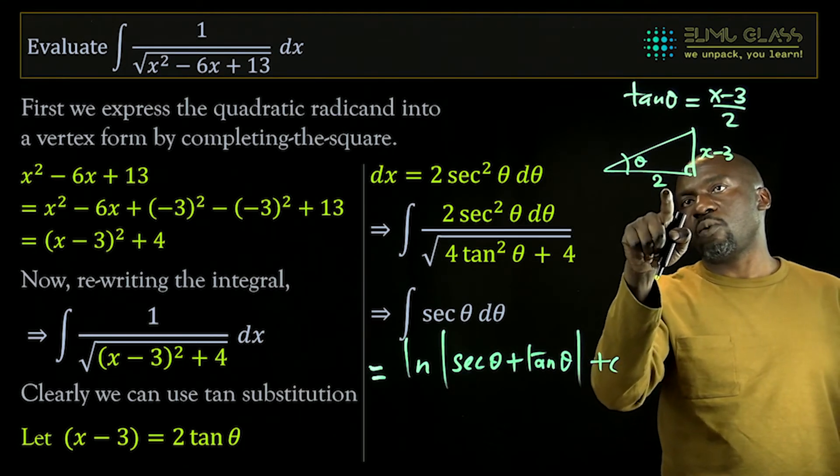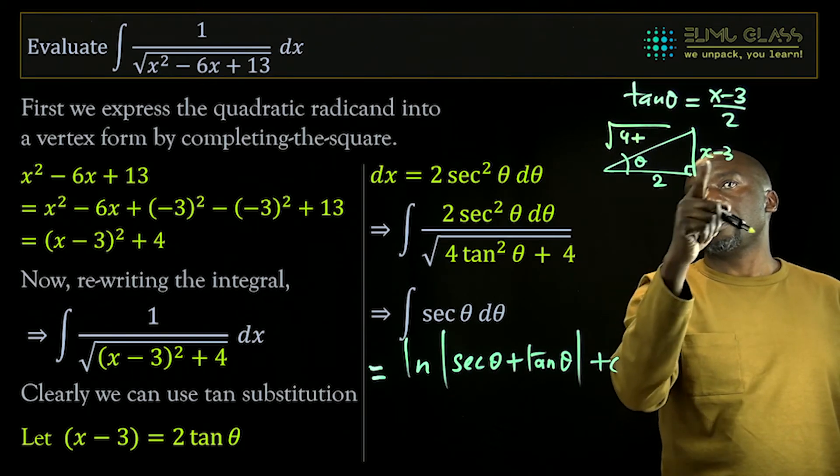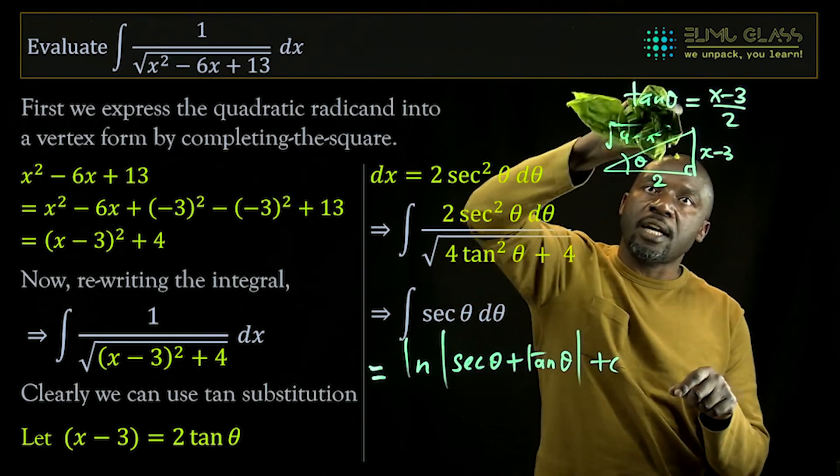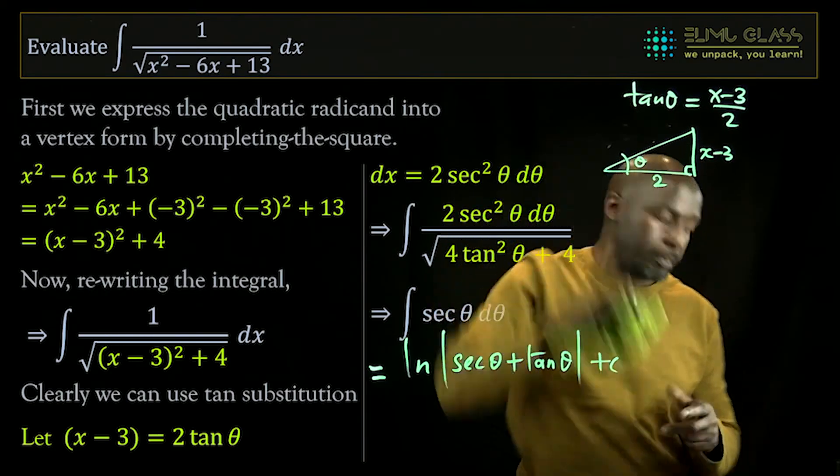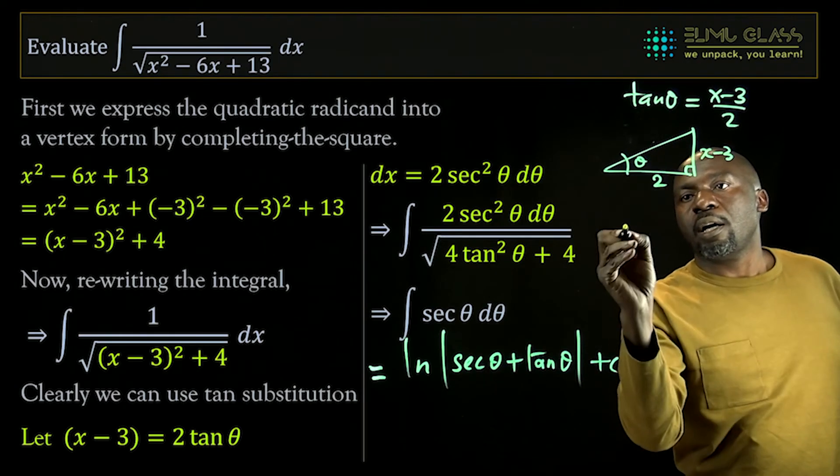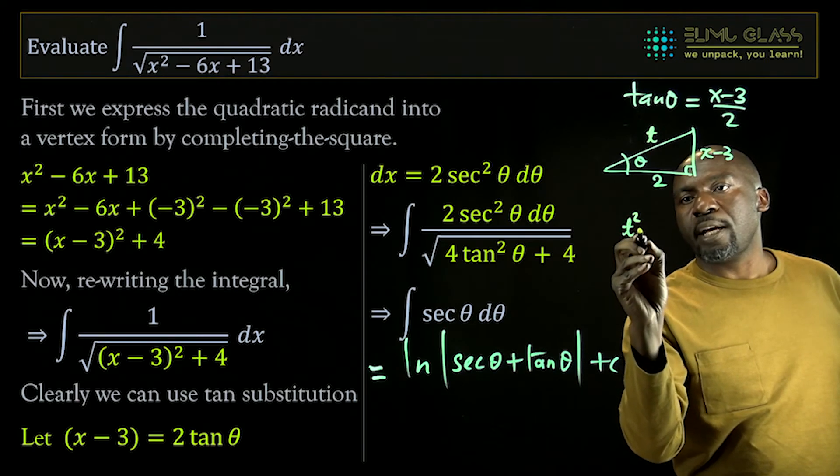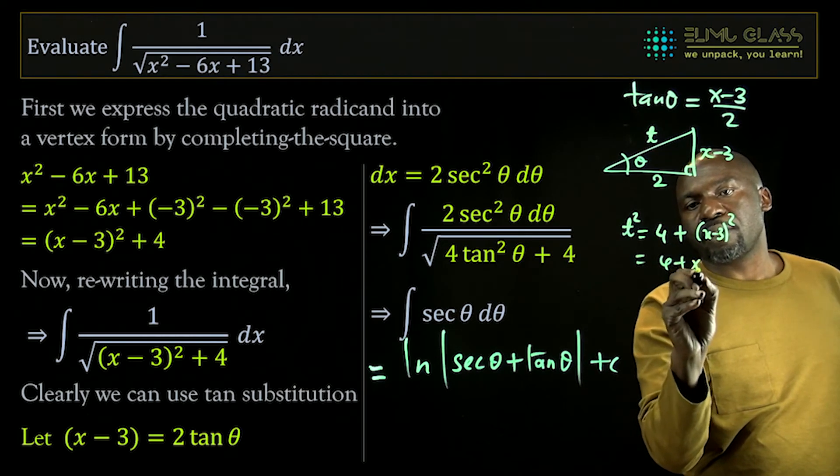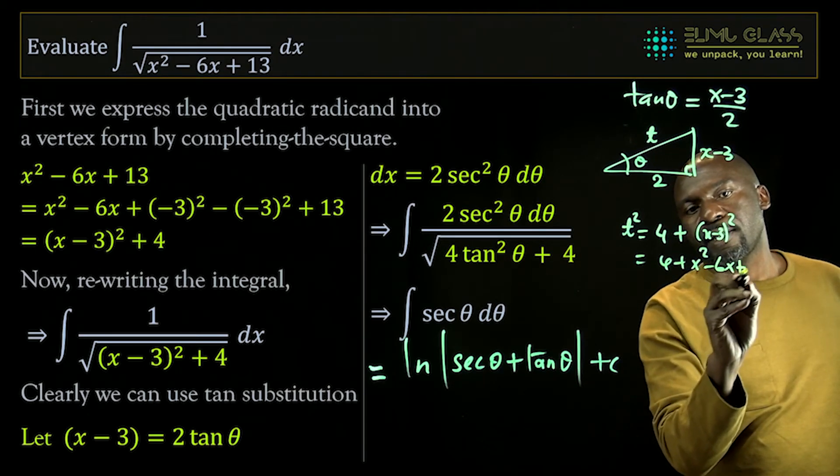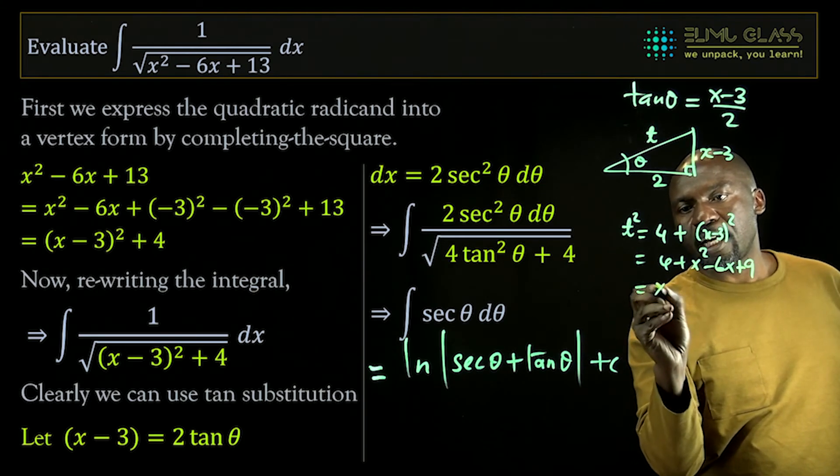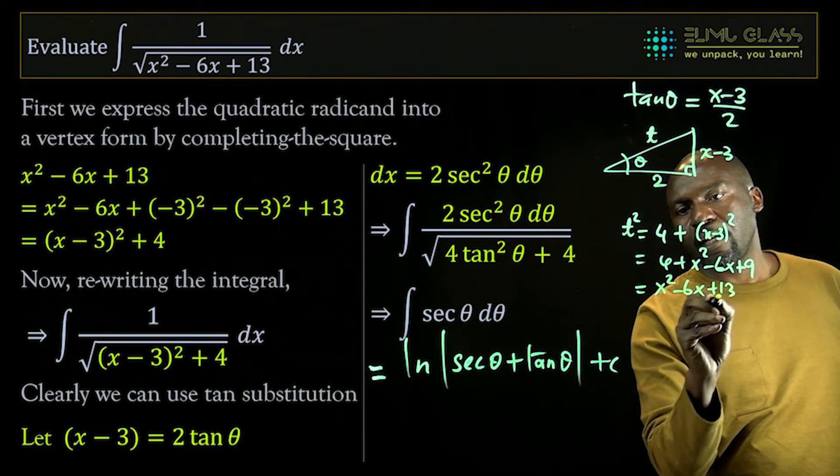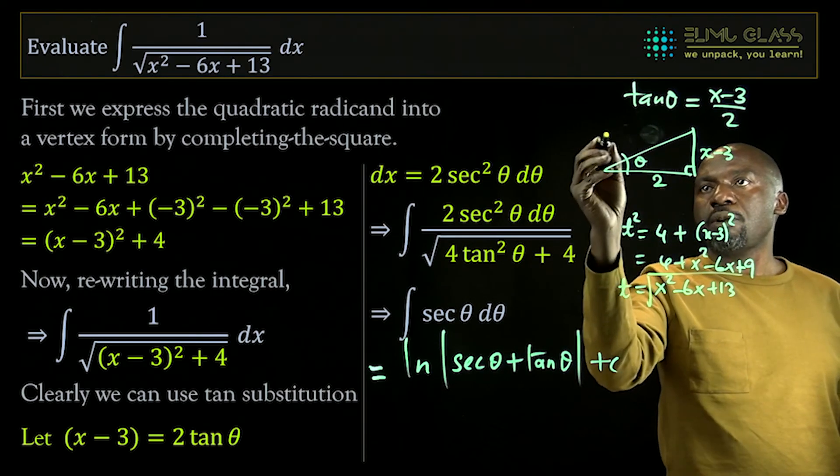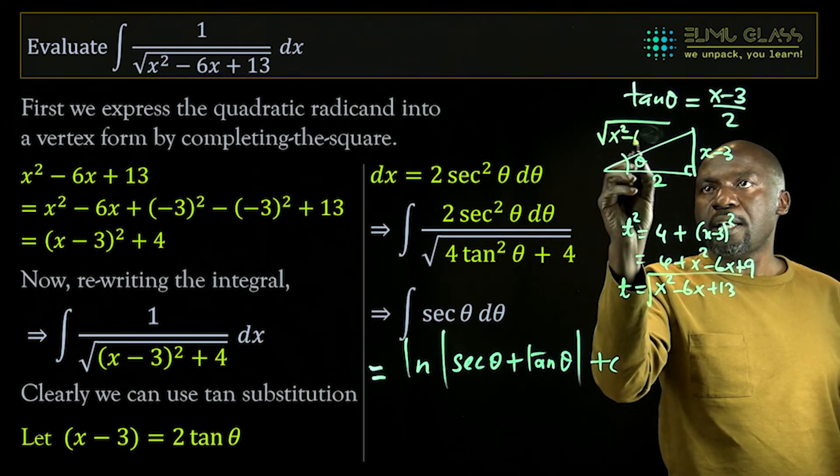And so I can now find the hypotenuse. The hypotenuse is the square root of the sides squared. So t squared is going to be 2 squared, which is 4, plus x minus 3 squared. This is 4 plus x squared minus 6x plus 9. If I simplify this, I get x squared minus 6x, and this is plus 13. And since I'm interested in t, not t squared, t becomes the root of this. So this t here is the square root of x squared minus 6x plus 13.